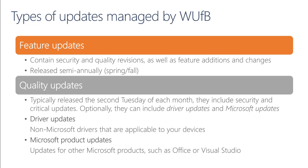Microsoft product updates, on the other hand, cover other Microsoft products — for example, Microsoft Office Perpetual or Visual Studio. Quality updates are released monthly, typically the second Tuesday of each month, also known as Patch Tuesday.